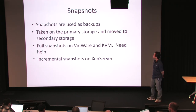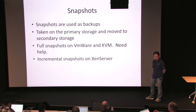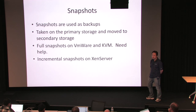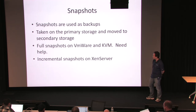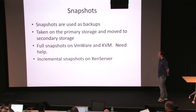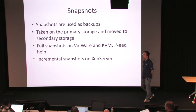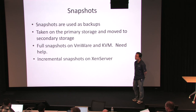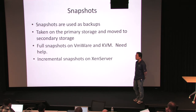Snapshots are meant to be used as backups for DR. We take them on primary storage, move them to secondary storage, and then remove them from primary storage. Today we do full snapshots on VMware and KVM. KVM actually has a problem where it may not be crash-consistent when you take the snapshot, but that's a problem with the hypervisor. We need help adding incremental snapshots to these two hypervisors specifically. We do incremental snapshots on XenServer. On CloudStack, when a VM is terminated, the VM is actually persistent — you stop the VM, the VM stays around, the storage stays around, and so do all of the snapshots.